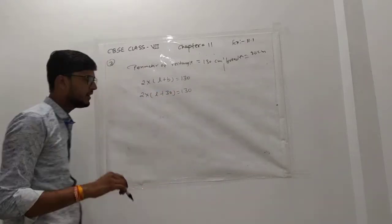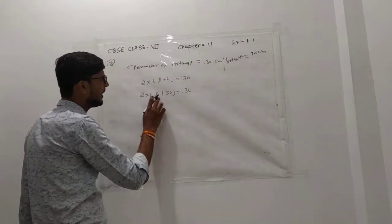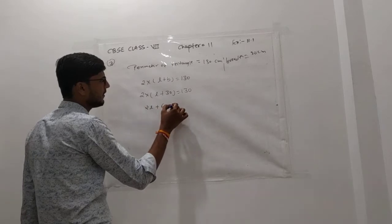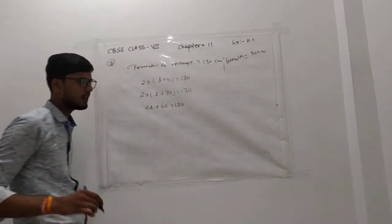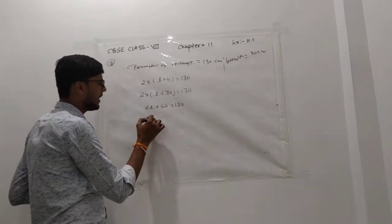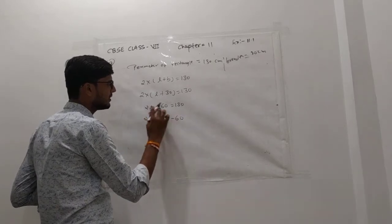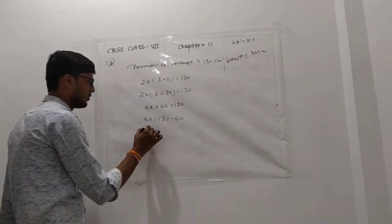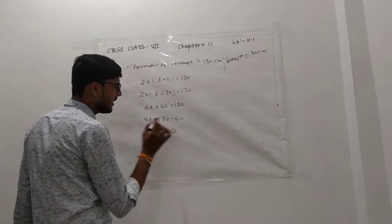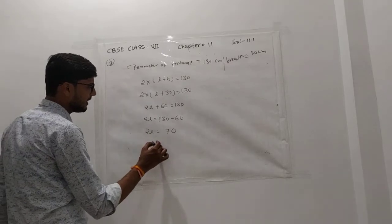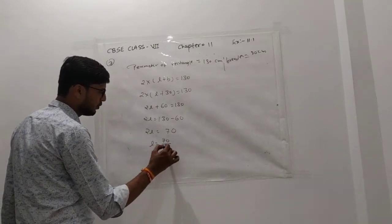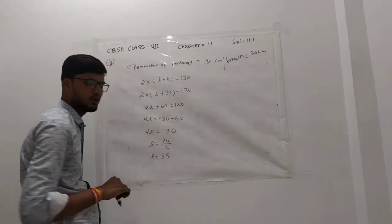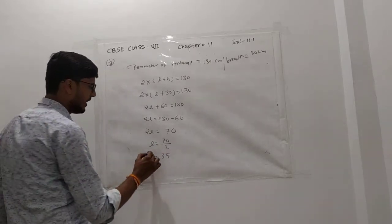So 2L + 60 = 130. Therefore 2L = 130 − 60 = 70. So L = 70 ÷ 2 = 35. The length of the rectangle is 35 cm.